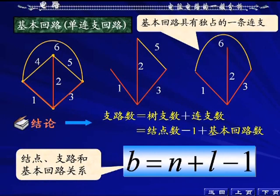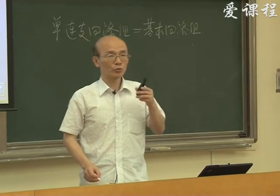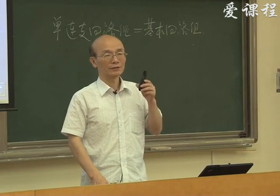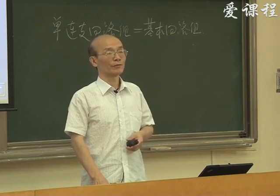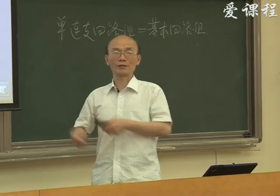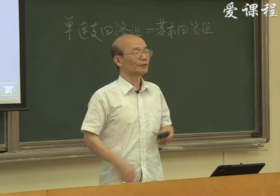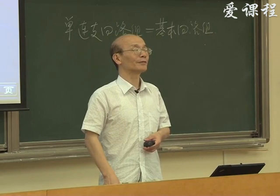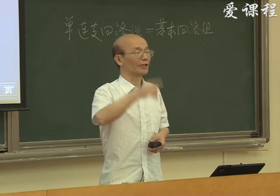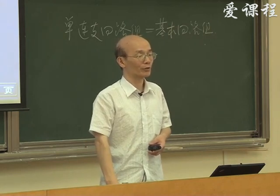连枝数就等于基本回路数。整个节点、支路和基本回路的关系：B = (N-1) + L，即B等于N加L减一。N是节点数，L是独立回路数或基本回路数。要特别强调：独立回路可以不是基本回路，但基本回路一定是独立回路。我们为什么要讲基本回路？因为基本回路相对来说好找，规律性很强，选择树然后逐步把连枝填上就能得到基本回路。